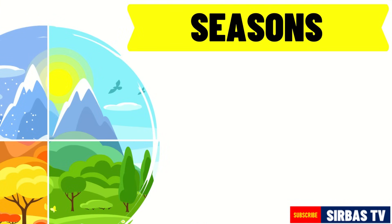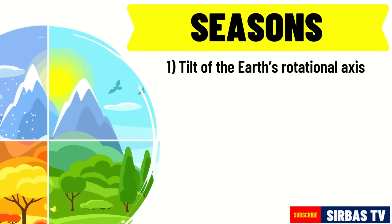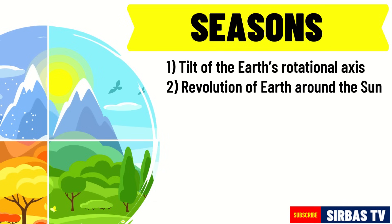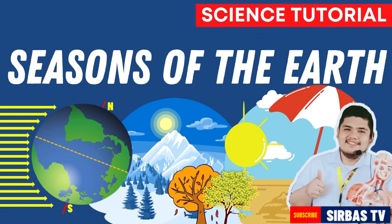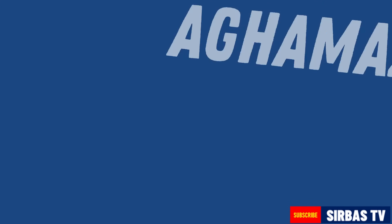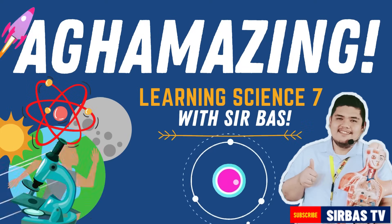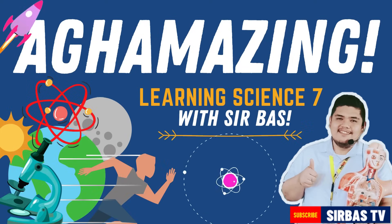In general, we experience seasonal change because of the tilt of the Earth's axis, revolution of the Earth around the sun, the direct rays of the sun, and the length of daytime. See you on our next science lesson — Agha-mazing!